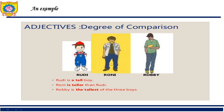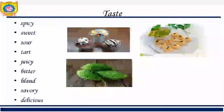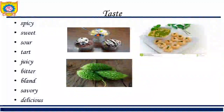Here is a grammatical comparison: Rudy is a tall boy, Roni is taller than Rudy, and Robbie is the tallest among the three boys. It is said that a man's character may be learned from the adjectives which he habitually uses in conversation, and after this video you will be using good adjectives.